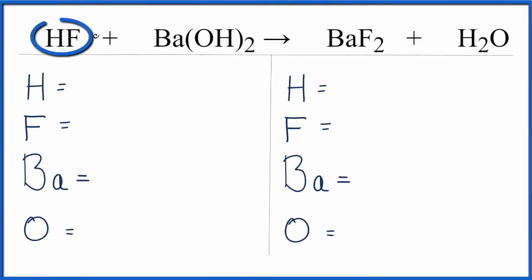In this equation we have HF, hydrofluoric acid, plus Ba(OH)₂, barium hydroxide. So we have an acid and a base - this is a neutralization reaction. We'll end up with barium fluoride, BaF₂, that's a salt, plus water.